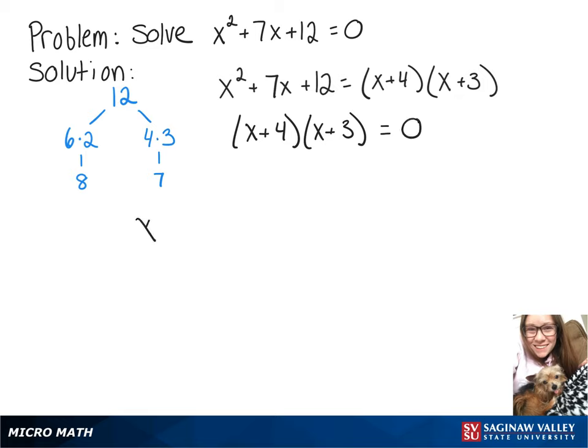Now we're going to rewrite that as x plus 4 equals 0 or x plus 3 equals 0. So we're going to end up with two solutions here. When we solve our equation on the left, we'll get x is equal to negative 4. Or our other solution to our equation on the right, x equals negative 3.